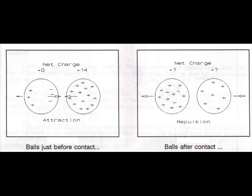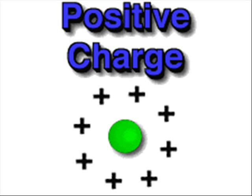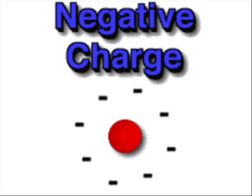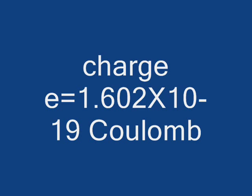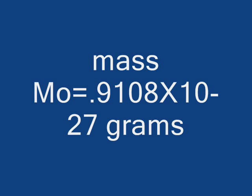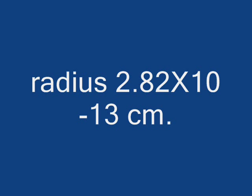A positive charge means that there is a deficiency of electrons. A negative charge means that there is a surplus of electrons in relation to the neutral condition of the atoms. Electrons are the elementary particles of electricity. Each electron has a charge, a rest mass, and a radius.